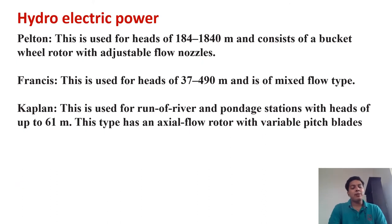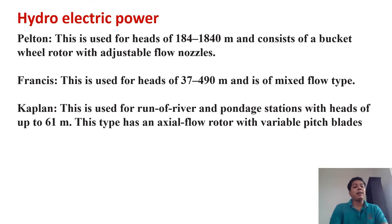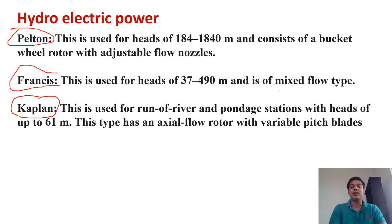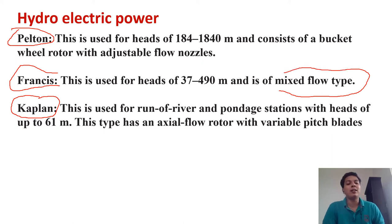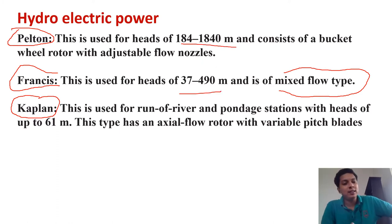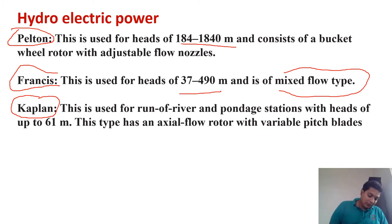We use different types of turbines: the Pelton turbine for high head, the Kaplan turbine for low head, and the Francis turbine for medium head — which is why Francis is called a mixed flow type turbine. Iduki power plant uses the Pelton type turbine because of its high head conditions.